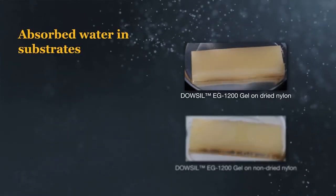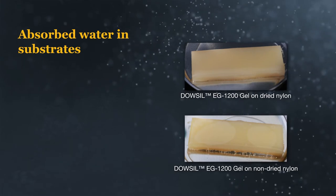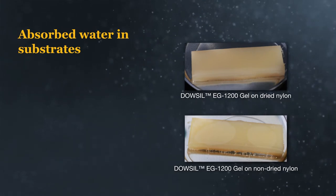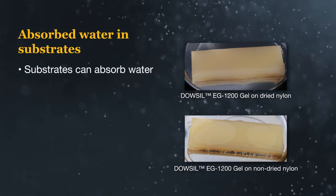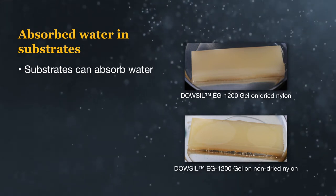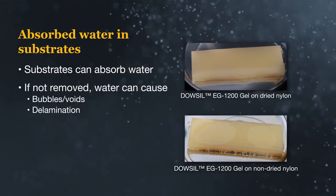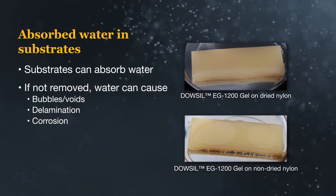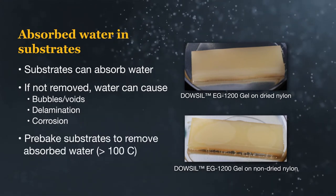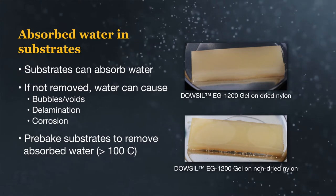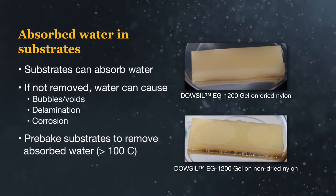Absorbed water in substrates can also create issues in void formation in cured products. Substrate materials like cast aluminum and nylon can absorb a lot of water. In some rare cases, if this water is not removed, it could boil out of the substrate during curing at temperatures greater than 100°C. This water vapor can create voids in the silicone product during curing.